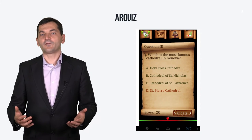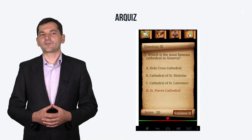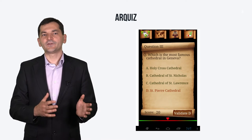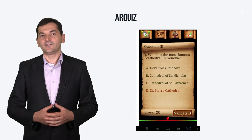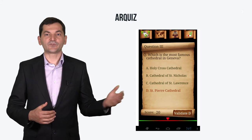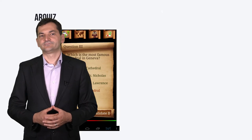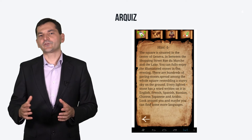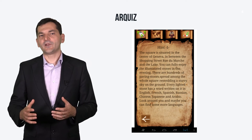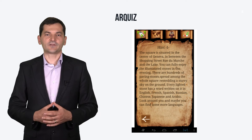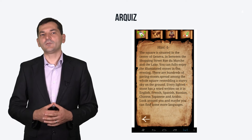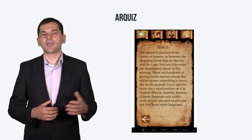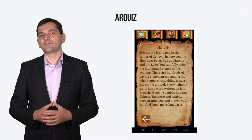The AR Quiz is first of all a quiz. The player has to answer a set of questions, and the score depends on the time for answering and the correctness of the answers. In this example, it is about the famous cathedrals in Geneva. It may happen that some questions are difficult and the player has no idea what the correct answer is. In this case, some hints are displayed to help finding the good answer, like the description provided in this example.